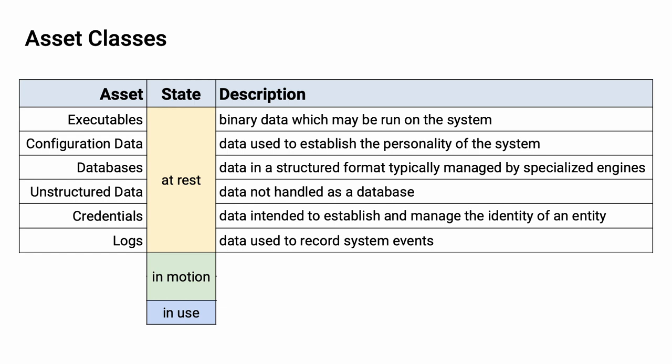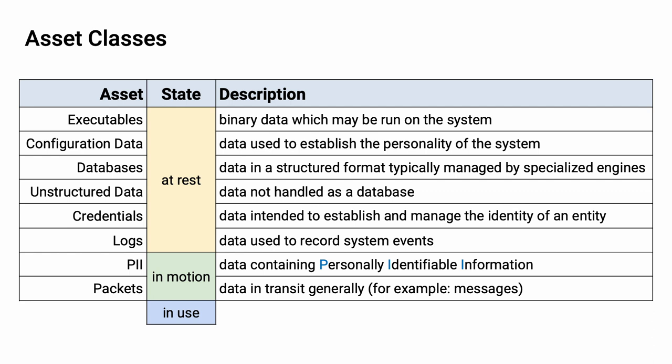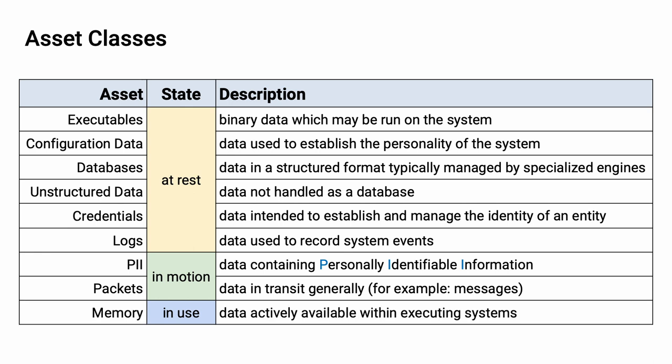For data in motion, we're going to think about either PII — personally identifiable information — because of its intrinsic sensitivity, and also, more generally, packets themselves. These are the data units being used to carry messages with data in transit. Finally, for data in use, we're going to consider computer memory. Here we have data actively available within the executing system.